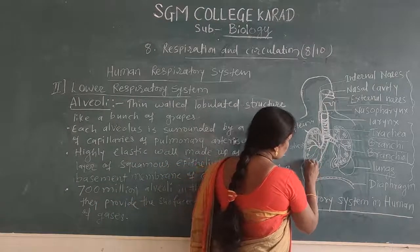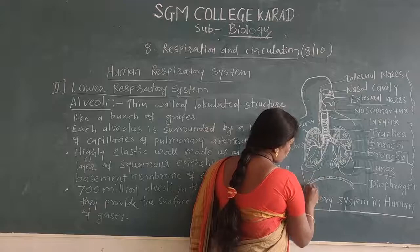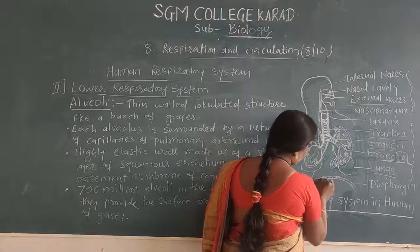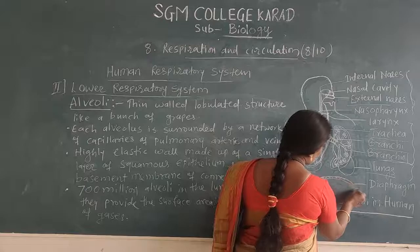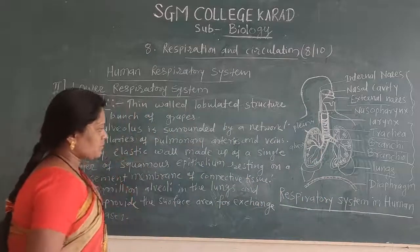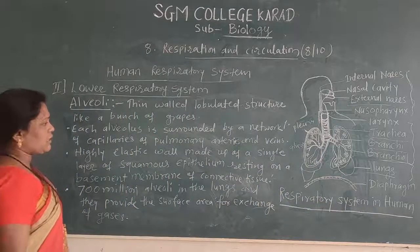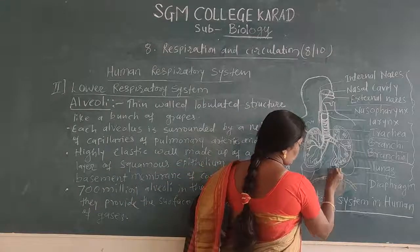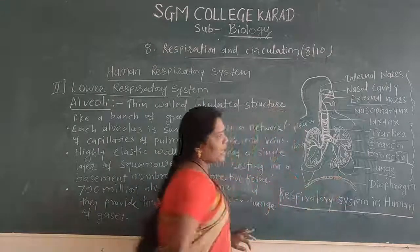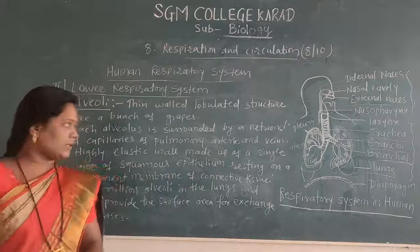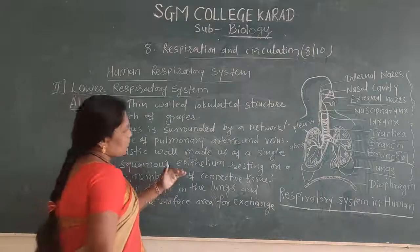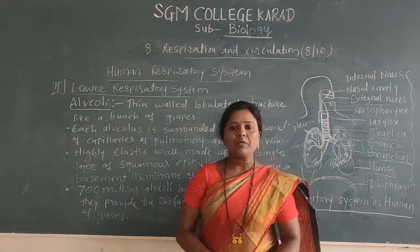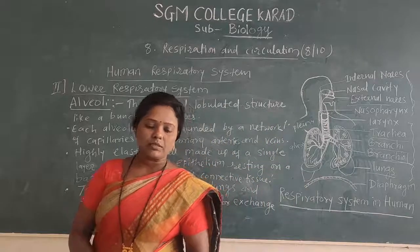Below the lungs, there is another part known as the diaphragm. The diaphragm is situated between the thoracic cavity and the abdominal cavity. We will discuss this in the next lecture.